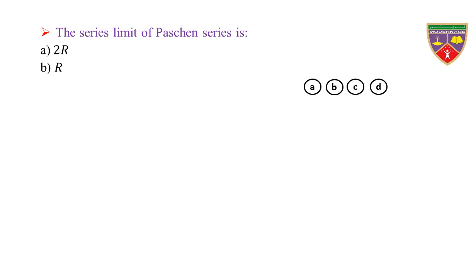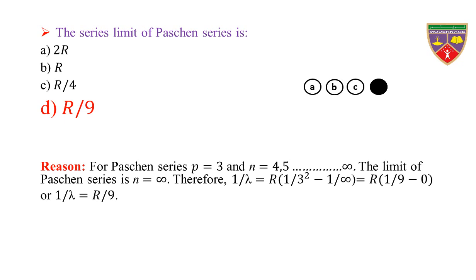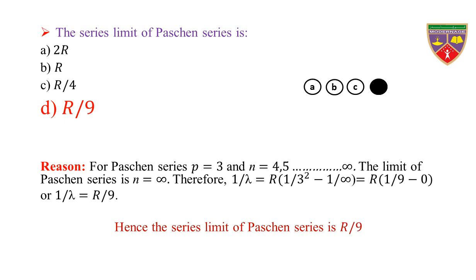The series limit of the Paschen series: Option A, 2R; Option B, R; Option C, R/4; Option D, R/9. The key is R/9. Therefore, the correct option is D. Reason: for Paschen series, p = 3 and n = 4, 5, and so on. The limit of the Paschen series is n = infinity. Therefore, 1/λ = R(1/3² − 1/∞) = R(1/9 − 0), or 1/λ = R/9. Hence, the series limit of the Paschen series is R/9.